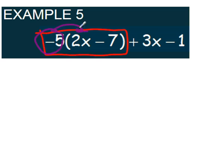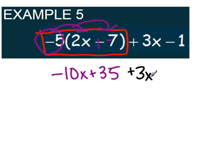So I'm going to take this negative 5 and distribute it to both the 2x and the negative 7. Negative 5 times 2x will give me negative 10x, and negative 5 times negative 7 will give me positive 35. Then I can bring down my plus 3x and my minus 1.